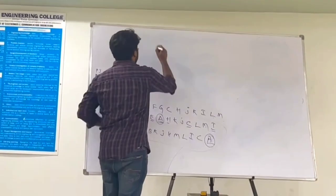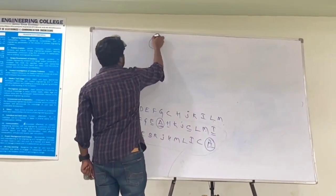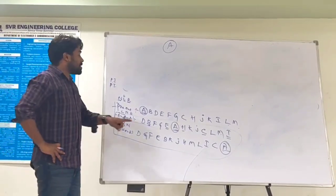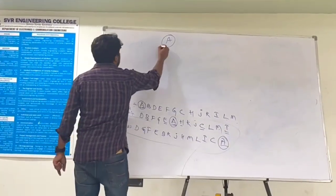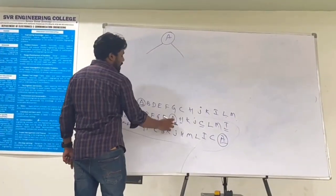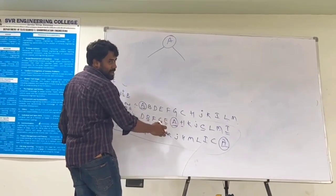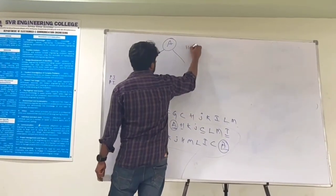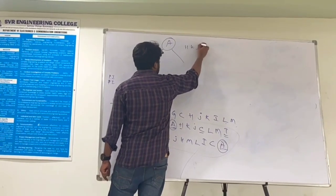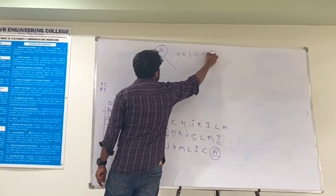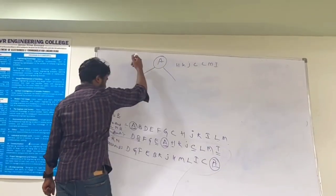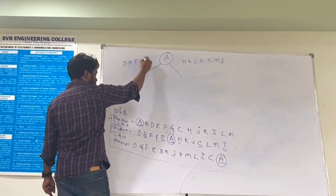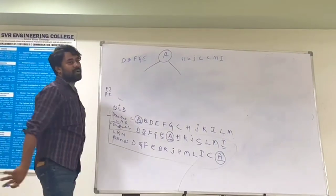In in-order, I'll identify the root and decide who is coming on the right side and who is coming on the left side. Who is coming on the right side? H, K, J, C, M, I. Who is coming on the left side? B, F, G. These are all the people who will come on the left side.